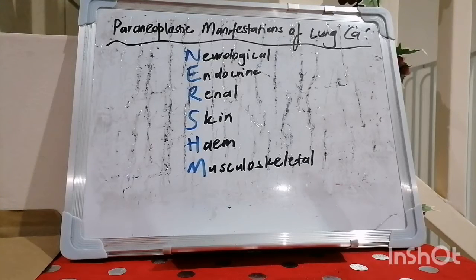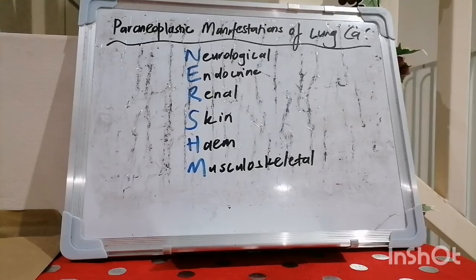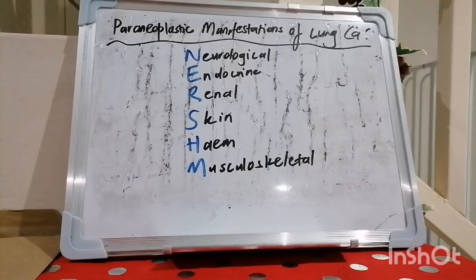In LEMS — Lambert-Eaton Myasthenic Syndrome — antibodies are produced against the presynaptic calcium channel, which causes diminished propagation of action potential and muscle weakness. The way you differentiate this from classic Myasthenia Gravis is that with Myasthenia Gravis, the weakness exhibits fatigability — it gets worse with repetitive muscle contraction. But with LEMS, it actually gets better with repetitive muscle contraction. The other difference is that with Myasthenia Gravis the antibody is against the postsynaptic acetylcholine receptor, whereas with LEMS the problem is antibodies against the presynaptic calcium channel.